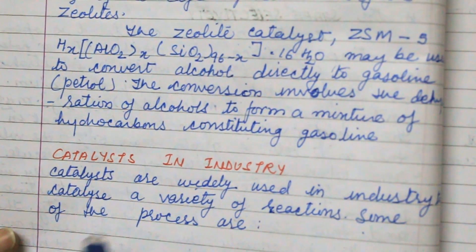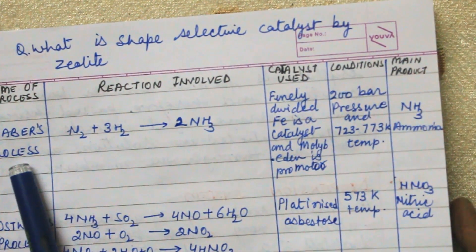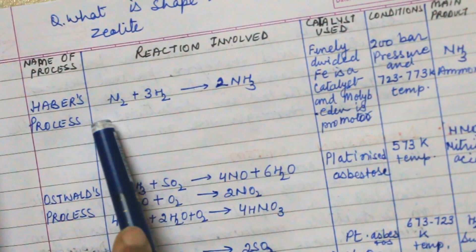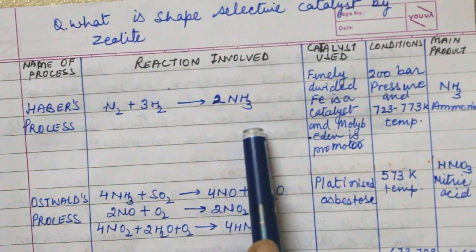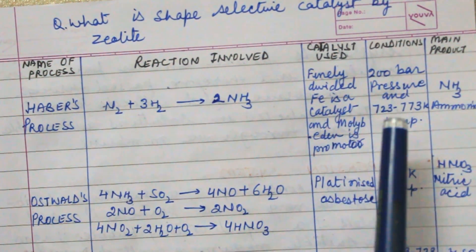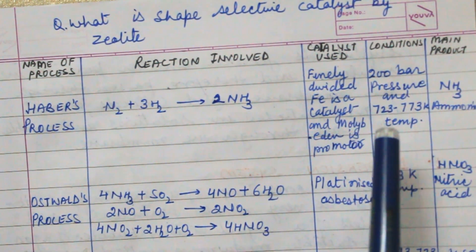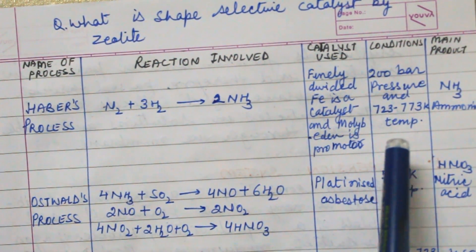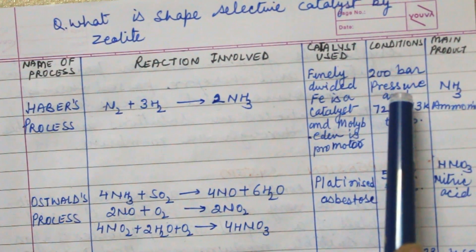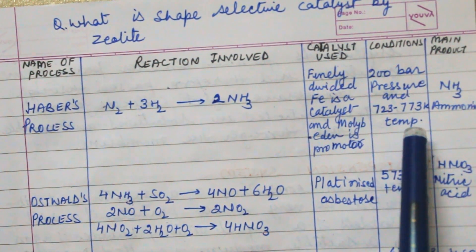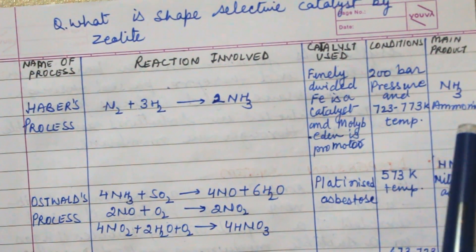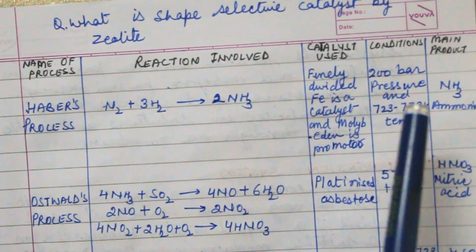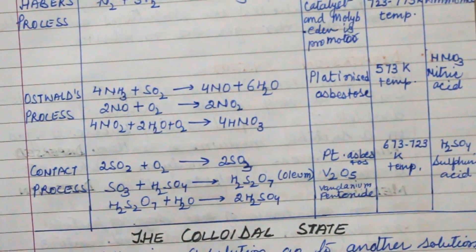Now we discuss catalysts in industry. Catalysts are widely used in industry for a variety of reactions. For example, in the Haber process, N2 and H2 combine to form ammonia; the catalyst is iron (Fe) and molybdenum is the promoter. The pressure is 200 bar, temperature is 723 to 773 K, and the main product is ammonia.